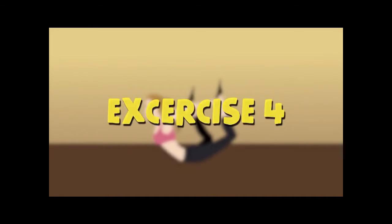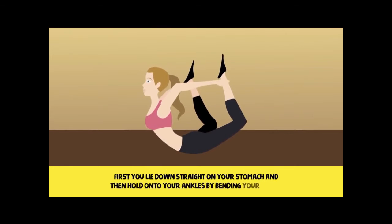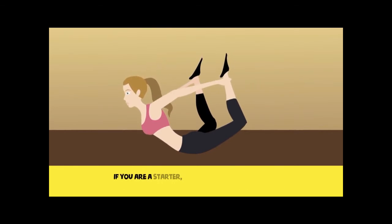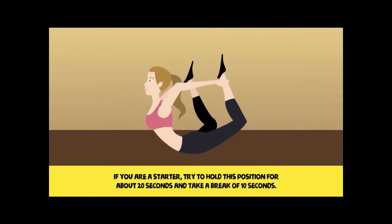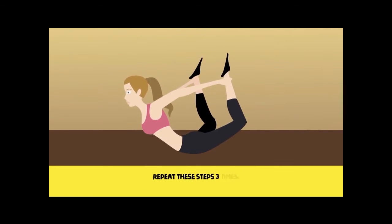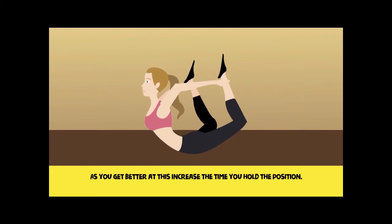Exercise 4. First, you lie down straight on your stomach and then hold onto your ankles by bending your knees. If you are a starter, try to hold this position for about 20 seconds and take a break of 10 seconds. Repeat these steps three times. As you get better at this, increase the time you hold the position.